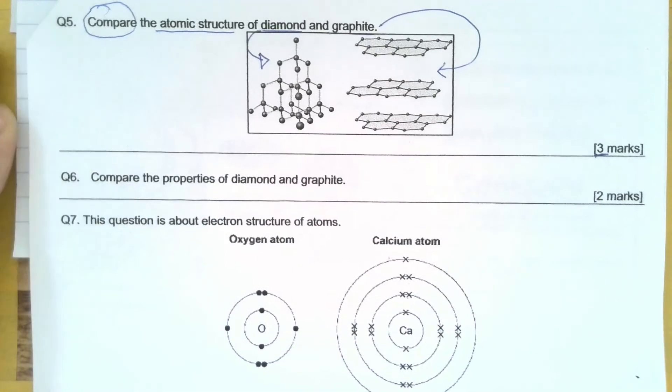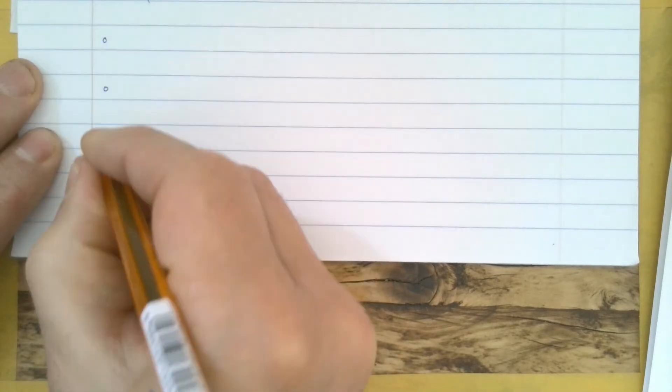Okay, so the first thing we do is we draw our bullet points. One, two, three. Okay, so what can we say about each of those structures? So what do we know?